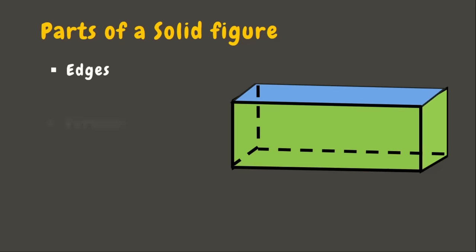Next, the vertices. Vertices are the corners, or the points where line segments or edges meet. In this figure, we have one, two, three, four, five, six, seven, and eight vertices.